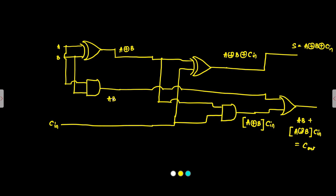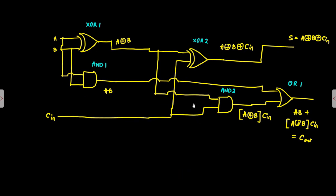This is the implementation using XOR gate with two-input gates. We have XOR number 1, XOR number 2, AND number 1, AND number 2, and OR number 1. So we use two XOR gates, two AND gates, and one OR gate. Now suppose we are allowed to use three-input gates — how can we do that in that case?